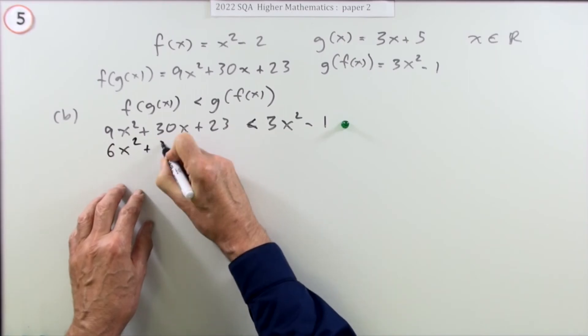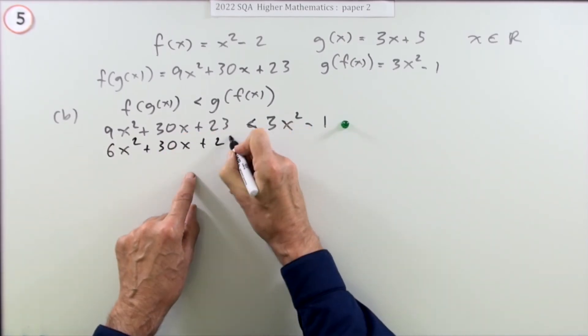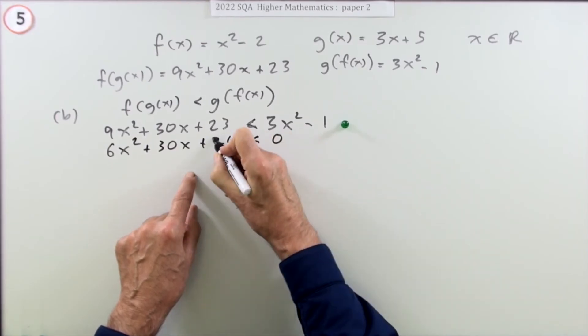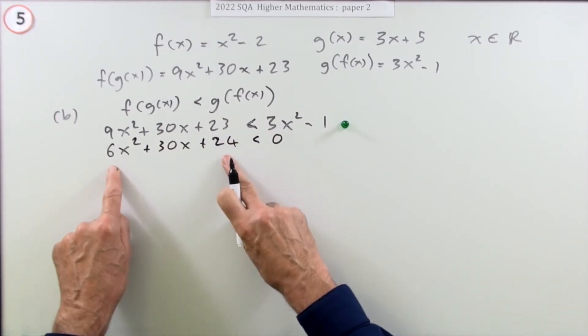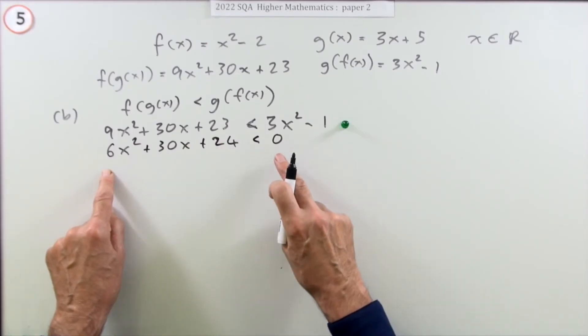There's no other x squared term, so that's 30x. Take the 1 across - they're all multiples of 6, which is handy because you solve this the same way: factorize it, since zero is still the important part.